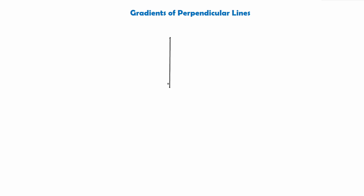So what does perpendicular actually mean? What does it mean if we have perpendicular lines? Well you might have heard of it before. Perpendicular means two lines — for example this line here and this line directly at the bottom of it — these lines are perpendicular because they meet at a right angle. Any two lines that meet at a right angle or are at a right angle to each other are called perpendicular.